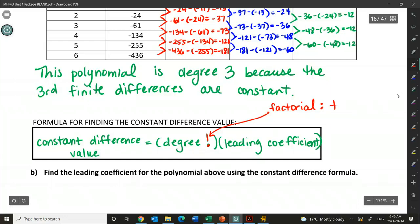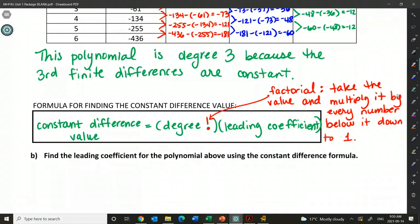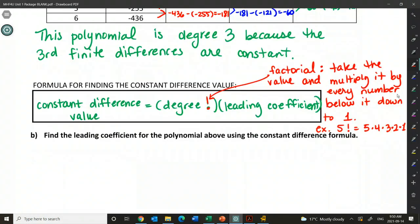So factorial, take the value and multiply it by every number below it, or I guess we'll say down to 1. So example, 5 factorial means 5 times 4 times 3 times 2 times 1. So we multiply 5 by every number below it until we hit 1. So this is going to be 20 times 6, so that's going to give us 120.